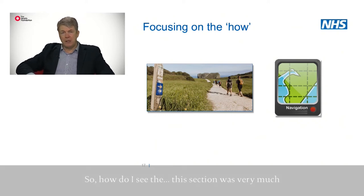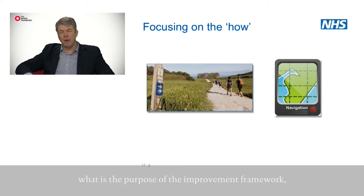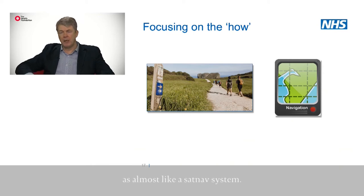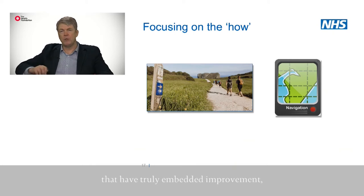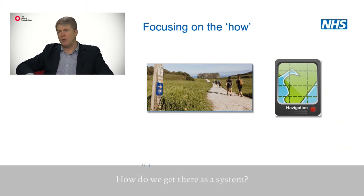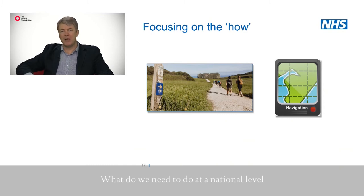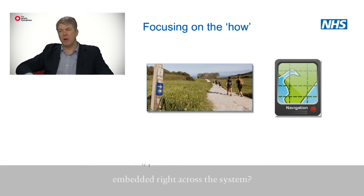How do I see the purpose of the improvement framework — the 'why'? I see it very much as almost like a sat nav system. If we want to get to the organisations that have truly embedded improvement, how do we get there as an organisation? How do we get there as a system? What do we need to do at a regional level? What do we need to do at a national level in order that we can shift to having improvement embedded right across the system?